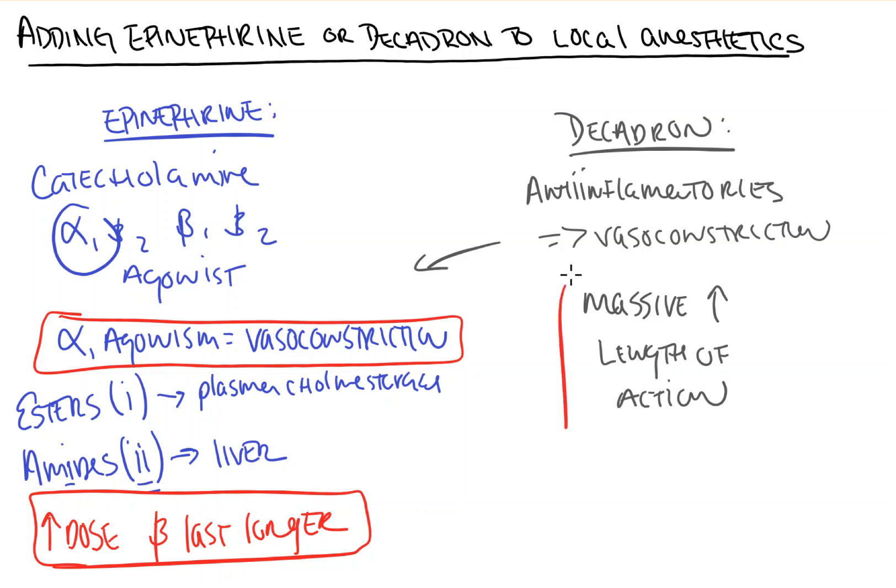There is a list of sites that get taken up quicker from fastest to slowest. Depending on what kind of block you have—epidural, spinal, whatever—sometimes adding decadron to a peripheral block can make it last for days at a time. The reason these two are together is that they're both going to increase your length of action of your block.